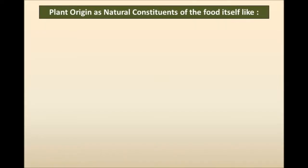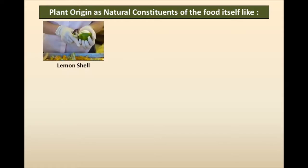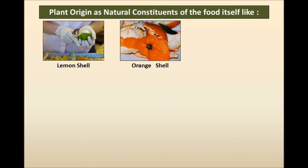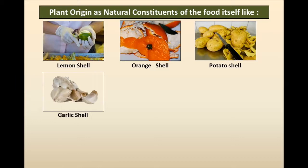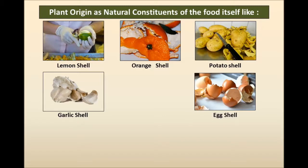The plant origin includes natural constituents of the food itself, like lemon shell when producing or preparing lemon juice, orange shell while preparing orange juice, and potato shell while preparing fried potato. Garlic shell may also accidentally fall onto our product. Eggshell is another example — if we are preparing a cake and you take a bite and find eggshell, it is very unpleasant. This is a physical hazard, so we must take care of this.